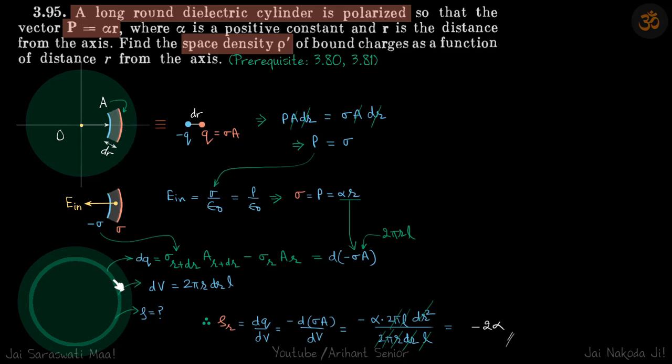Now to calculate the space density, let us consider a volume. The height of this cylindrical element is l, width is dr, and it's at distance r from the center. If we know the small charge dq on this element and the volume, then dq/dV will give us ρ(r), which we need.